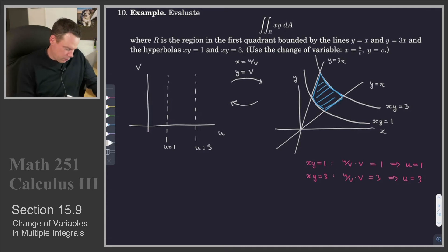What about these lines? y equals x. So, in the case of y equals x, well, y is equal to v, x is equal to u over v. So, that becomes v squared equals u, or u equals v squared. That's a parabola opening about the u axis.